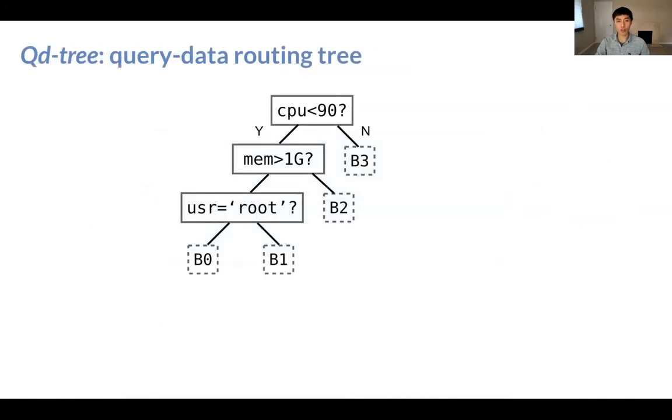Our solution is called QD-tree or query-data routing tree. At the high level, it is simply a decision tree that recursively partitions the data space into smaller and smaller subspaces. The intermediate nodes are what we call cuts, such as CPU less than 90 at the root here. And after a bunch of cuts, and after some terminating condition is met, we form the leaves, which are the data blocks.